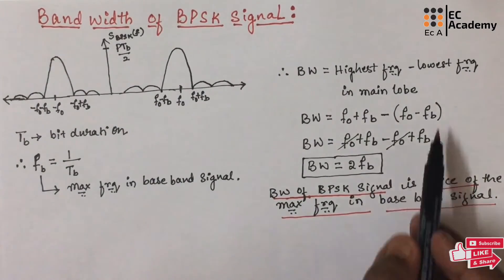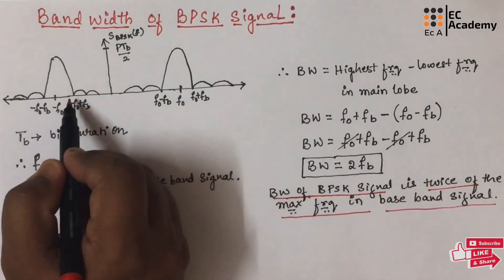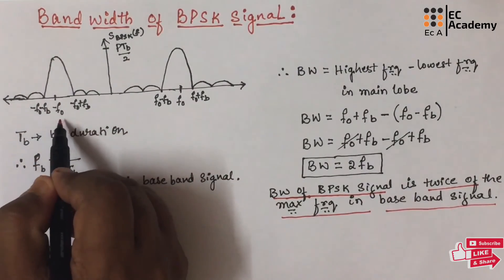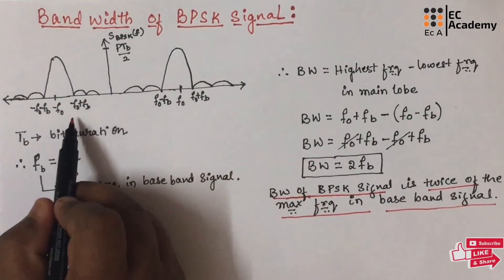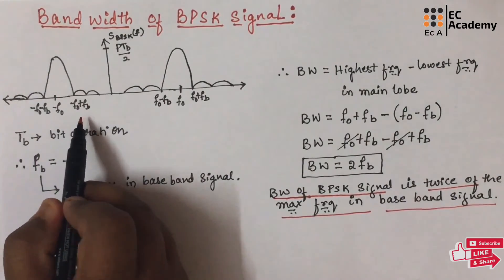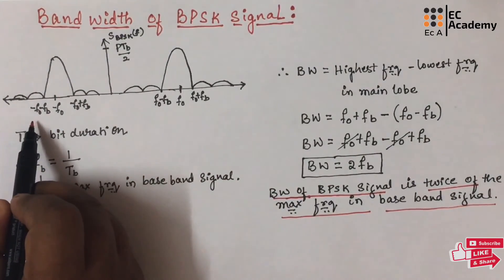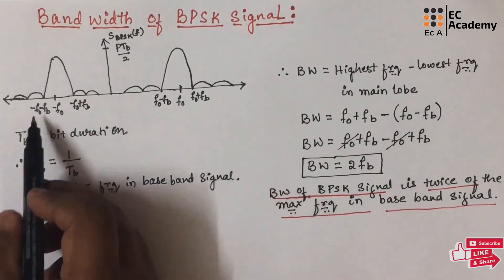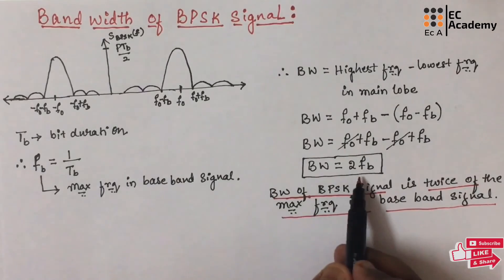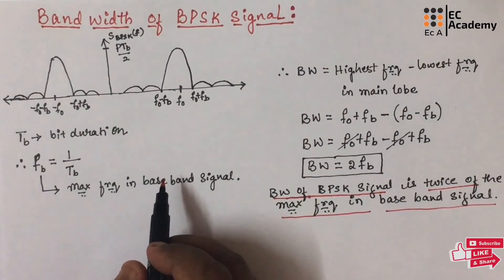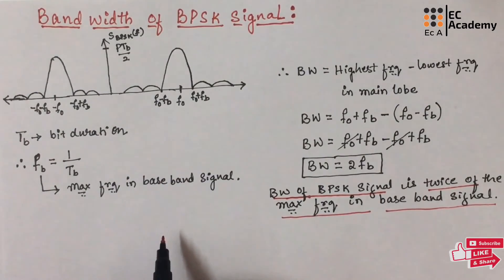You can do the same calculation by considering the main lobe which is centered across minus F0. In that case, you need to take the maximum frequency as minus F0 plus FB and the minimum frequency as minus F0 minus FB. If you do the calculation, you will get the bandwidth as 2FB itself. This is about the bandwidth of BPSK signal. I hope you have understood the topic. Thank you.